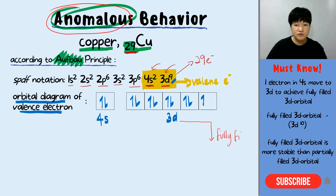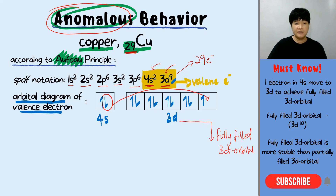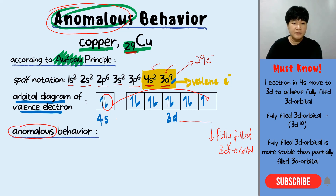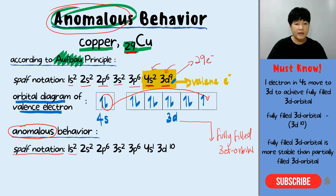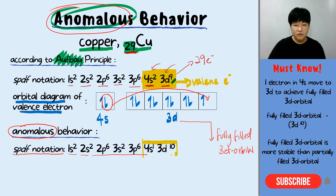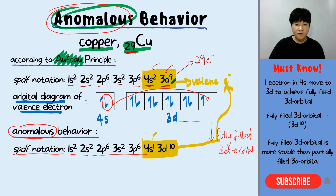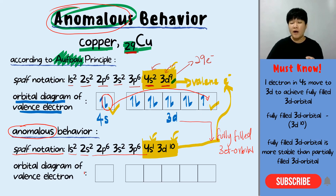Why does copper have anomalous behavior? Similar to chromium, but we want to achieve a slightly different thing — we want to make the 3d become a fully-filled 3d orbital. How? One electron from the 4s will be moved up to the 3d. In the anomalous behavior of copper, the valence electrons change: from 4s2 to 4s1, and from 3d9 to 3d10.